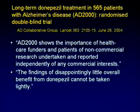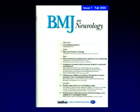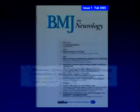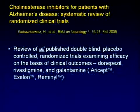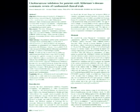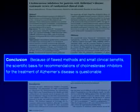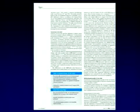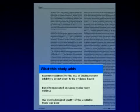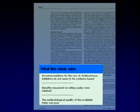The findings of disappointingly little overall benefit from donepezil cannot be taken lightly. This was published back in 2004. The British Medical Journal in fall of 2005 came out with a report looking at cholinesterase inhibitors for Alzheimer's patients — reviewing all published double-blind placebo-controlled randomized trials examining the efficacy of Aricept, Exelon, and Reminyl. Because of flawed methods and small clinical benefits, the scientific basis for recommendations of these drugs is questionable. The recommendations are not evidence-based. The benefits are minimal. The methodological quality of the available trials is poor. This is what supports a billion-dollar industry — no evidence of effectiveness whatsoever.